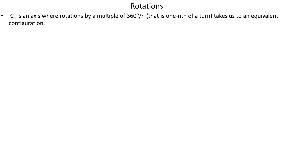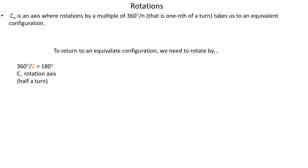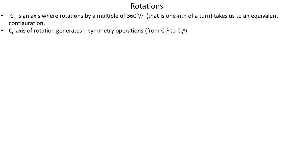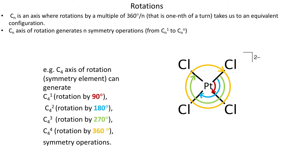Let's start with rotations. A CN axis is an axis where rotations by a multiple of 360 divided by N take us to an equivalent configuration. So C2 is a rotation axis that rotates in 180 degree increments, C6 is an axis that rotates in 60 degree increments, and so on. Below each axis type there is an example of a molecule that has this axis. Next important thing is that a CN axis of rotation generates N symmetry operations — we already saw that C4 generates 4 symmetry operations.